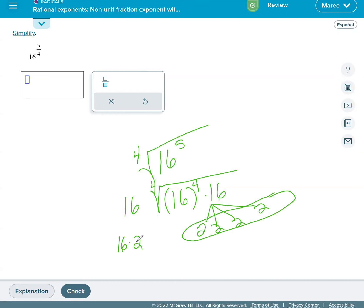And that is 16 to the five fourths power. So what is 16 times 2 anyway? 32, and that would be our final answer.